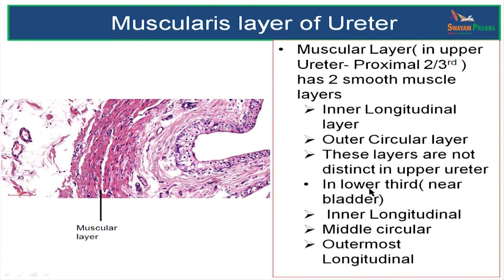In the lower third of the ureter, that is where the ureter is close to the bladder, there is an additional longitudinal smooth muscle layer added, and hence in the lower ureter there are three layers of smooth muscle: inner longitudinal, middle circular, and outermost longitudinal layer.